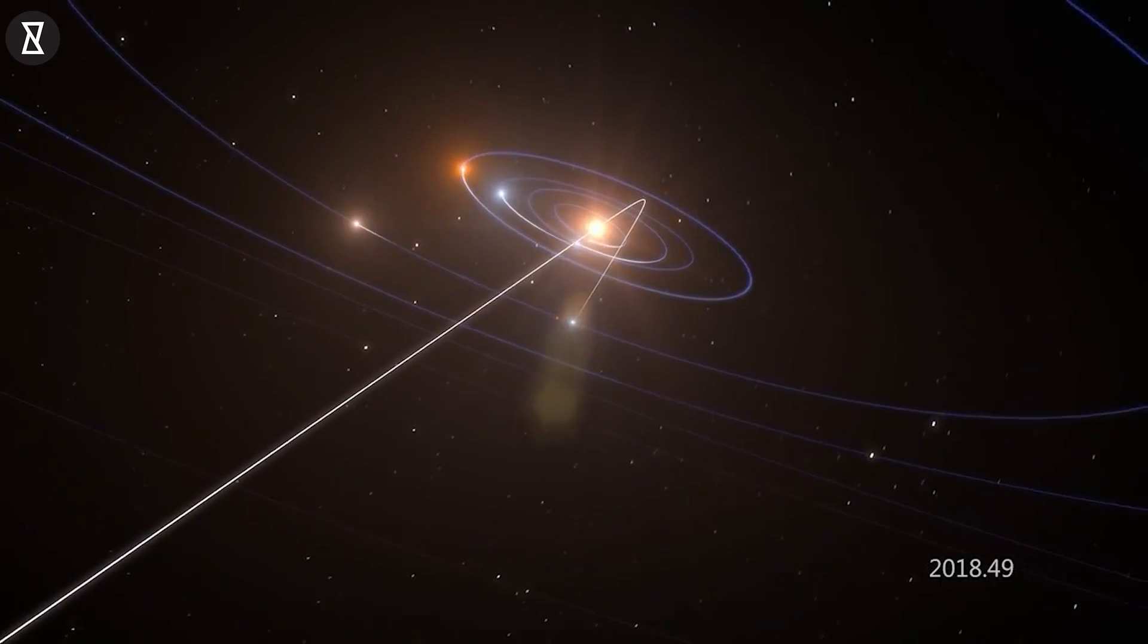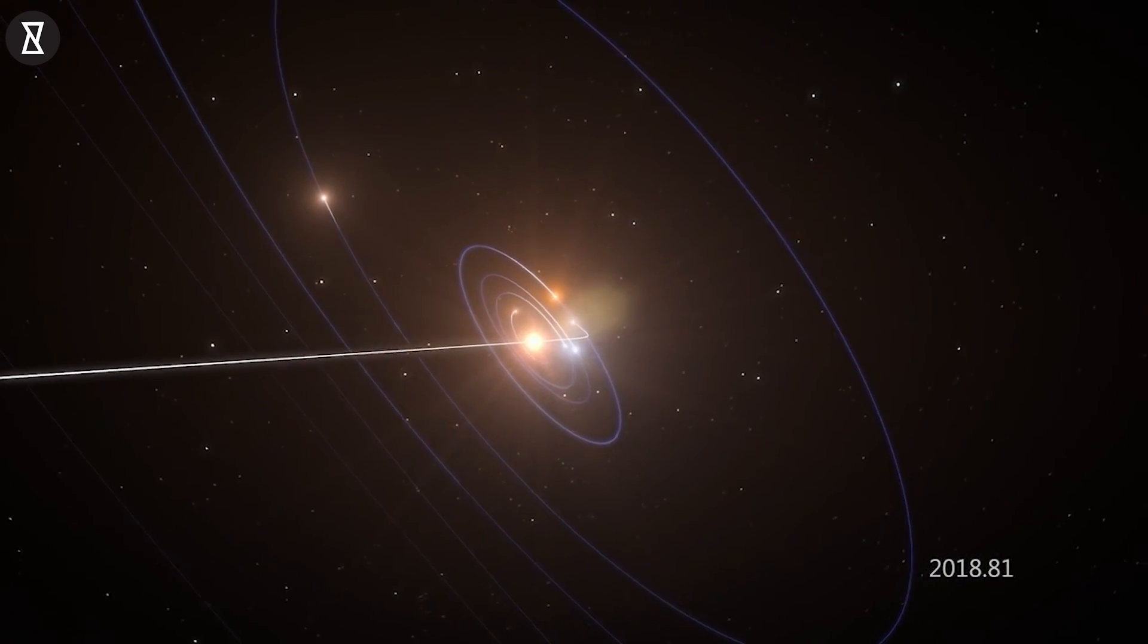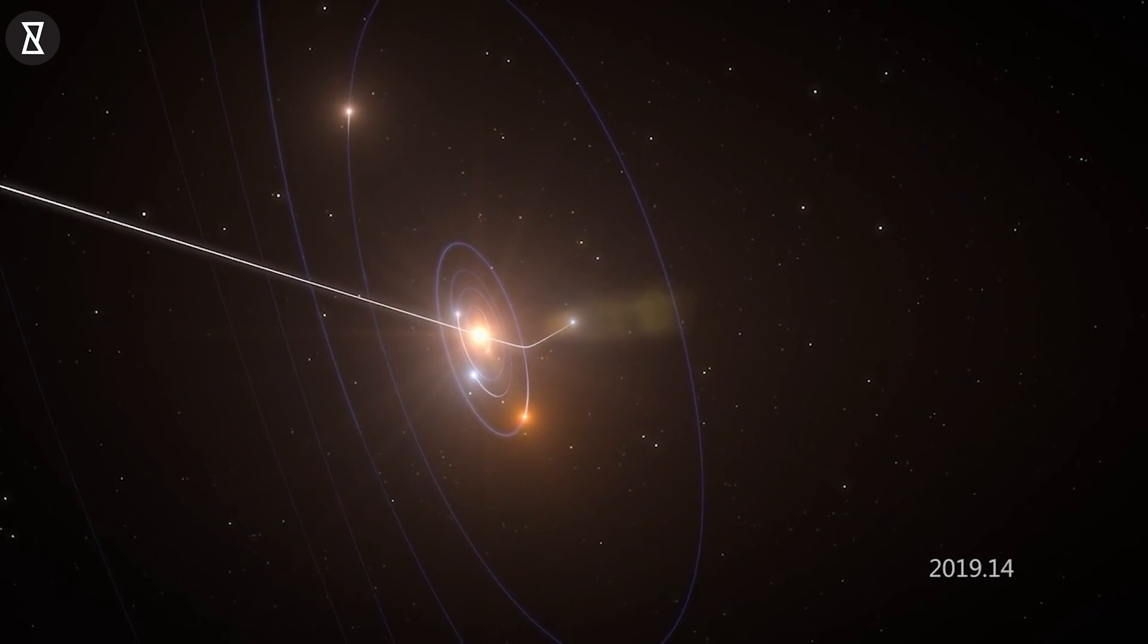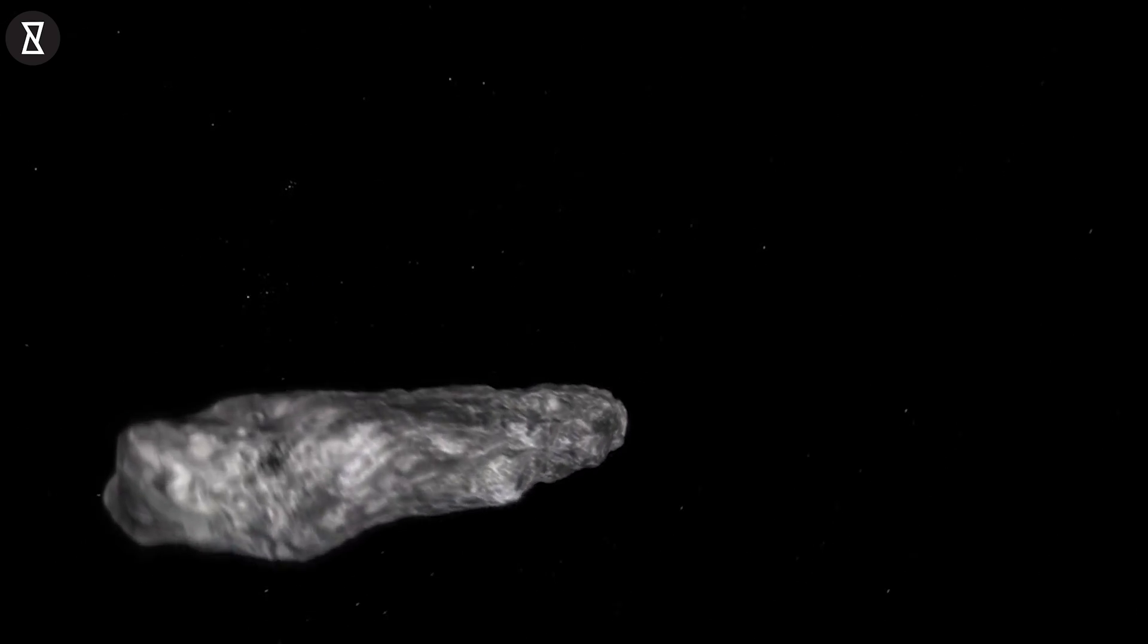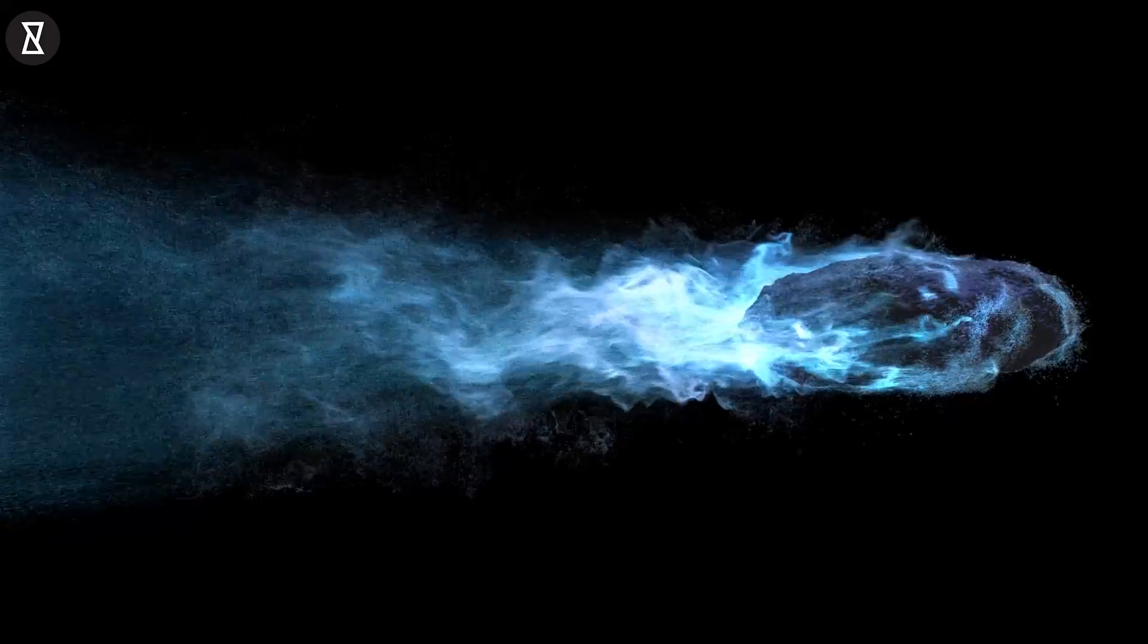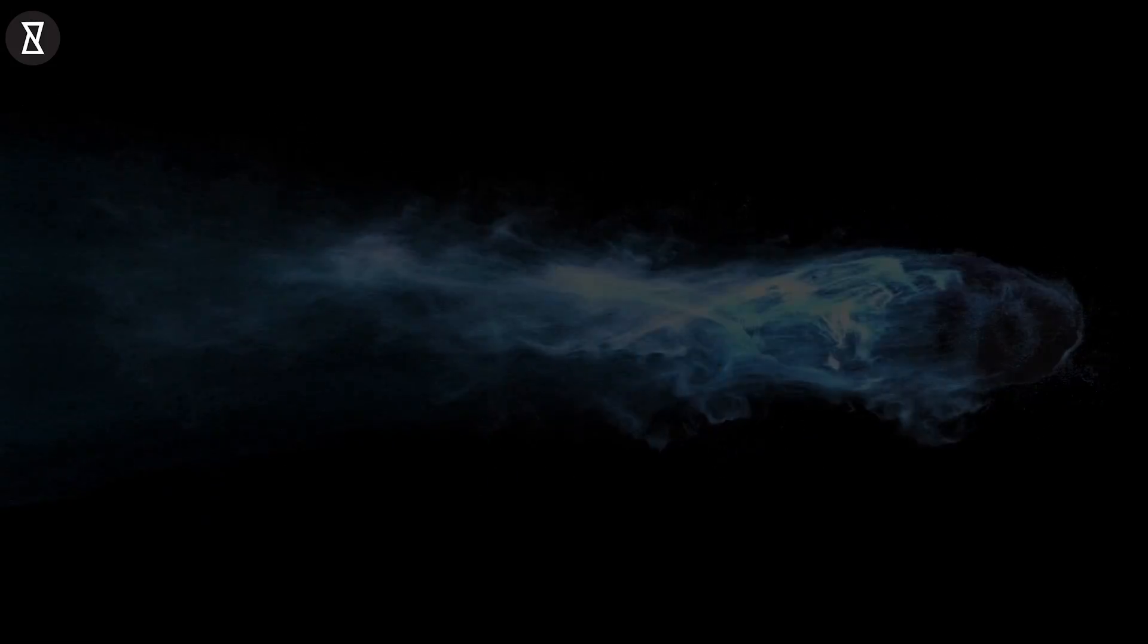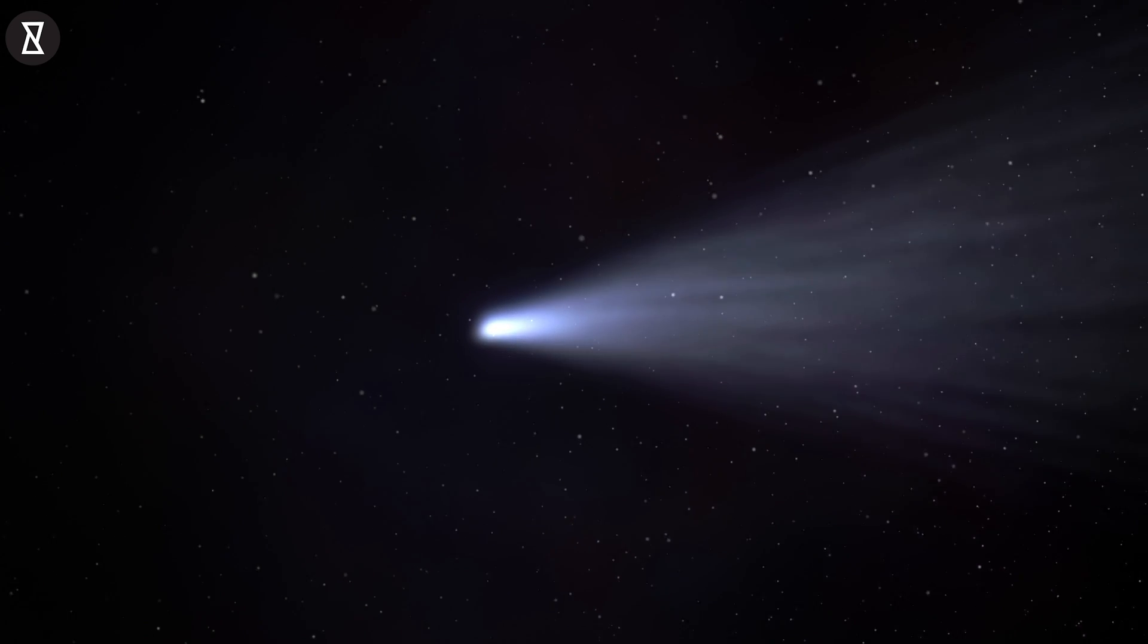After reaching its closest point to the Sun, the object began exiting the solar system at very high speed, enough to ensure it would escape our star's gravity. But even with such a massive speed, it accelerated in a very smooth and steady manner, totally contrary to what is expected from a rough and irregular comet during outgassing of its ices. The odds of such behavior from a naturally occurring comet is highly unlikely.